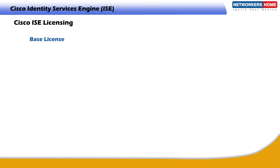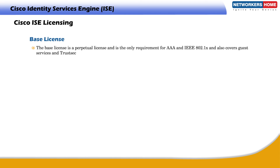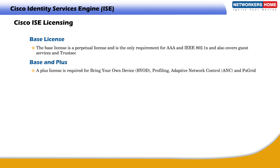The Base license is a perpetual license and is the only requirement for AAA, IEEE 802.1X, guest services, and TrustSec. A Base license is consumed for every active device on the network. A Plus license is required for Bring Your Own Device (BYOD), profiling, adaptive network control, and PX Grid. A Base license is required to install the Plus license, and the Plus license is a subscription for one, three, or five years.